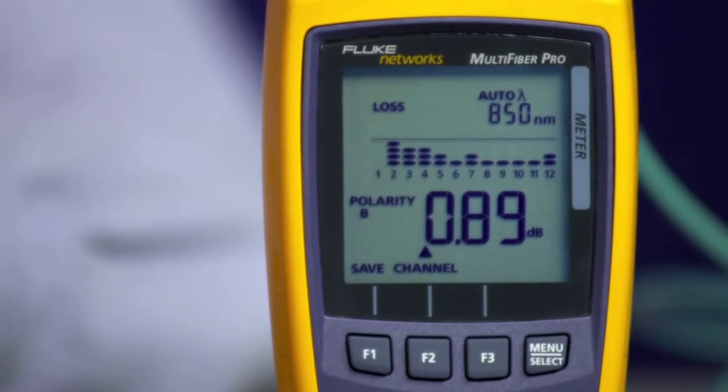The simple user interface allows you to easily determine if the cable passes the loss criteria you set. Any fiber that has excessive loss will be easy to spot in the simple bar graph. It takes longer to describe the test than it takes to complete.